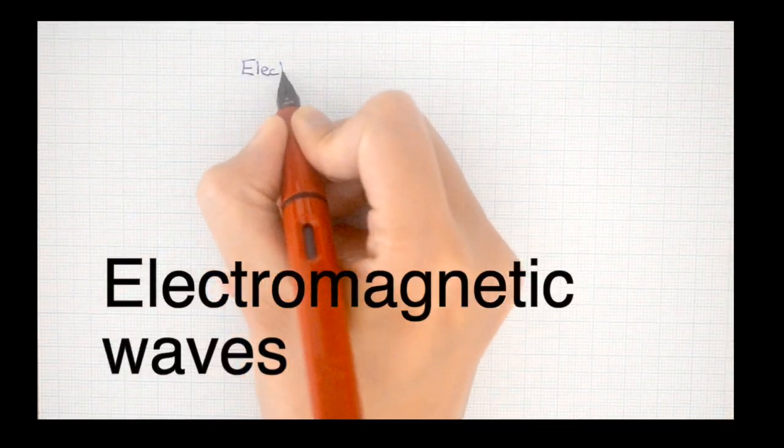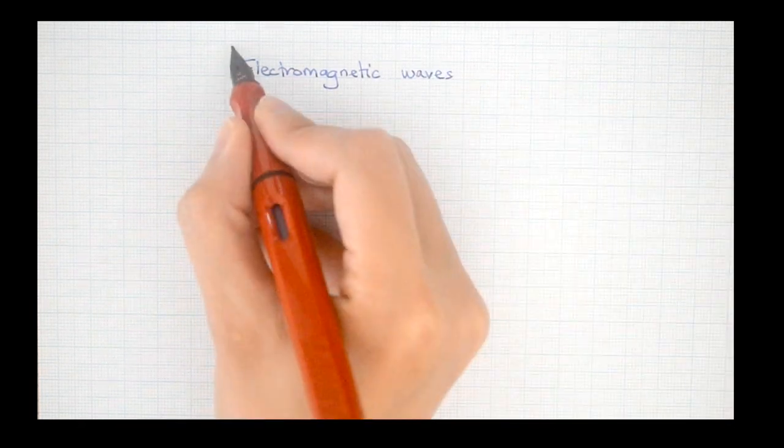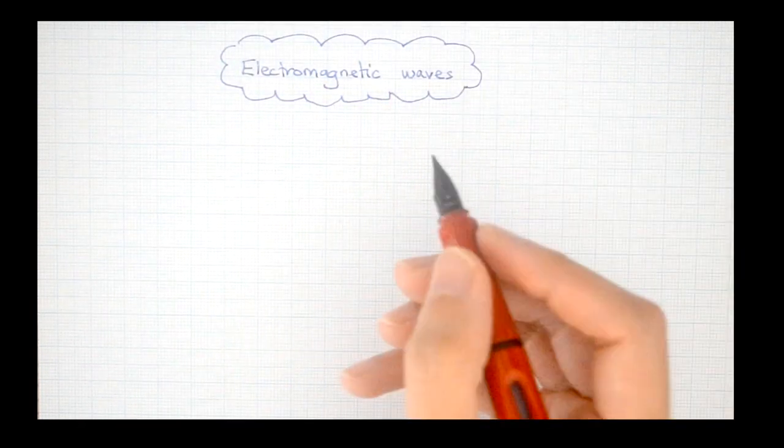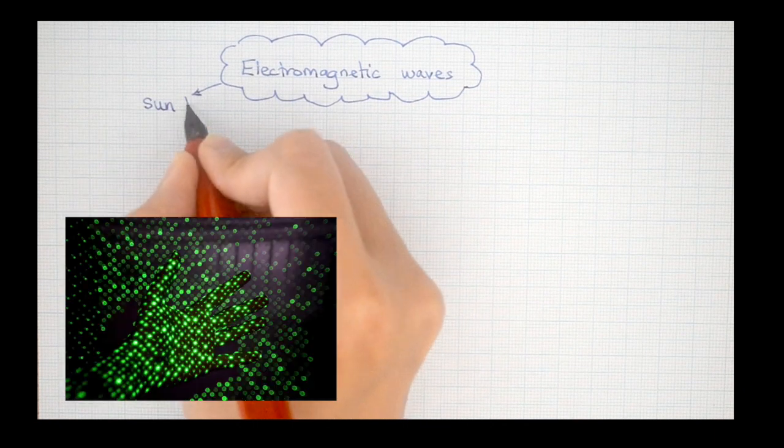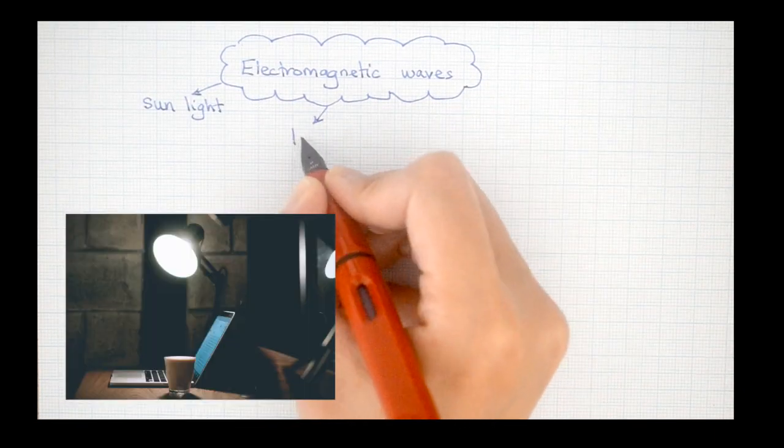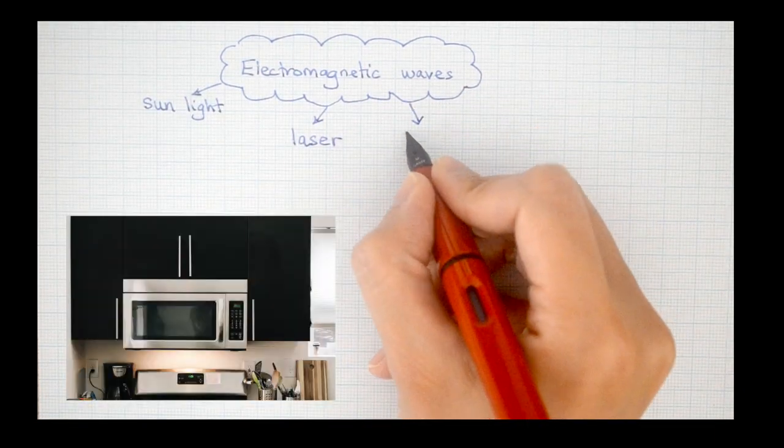The next category is electromagnetic waves. These waves are, for example, waves that you get from sunlight, the light from a laser pen, a light bulb, and the microwave that you use to heat up your food.